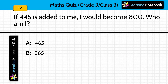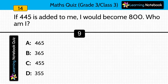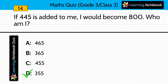If 445 is added to me, I would become 800. Who am I? Here we have to find this number. When 445 is added to that number, it becomes 800. Answer is 355, because 355 plus 445 equals 800.